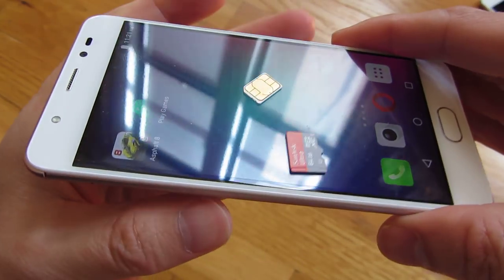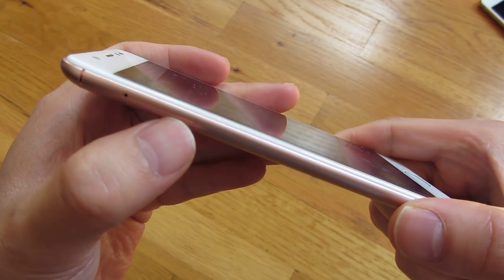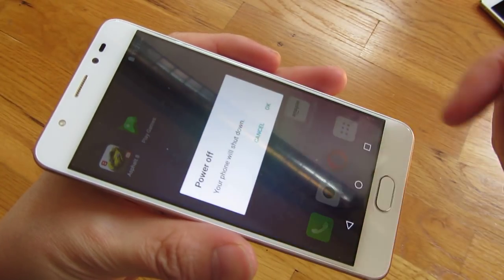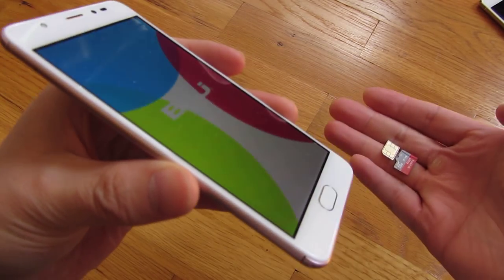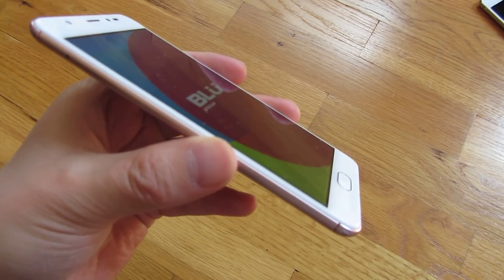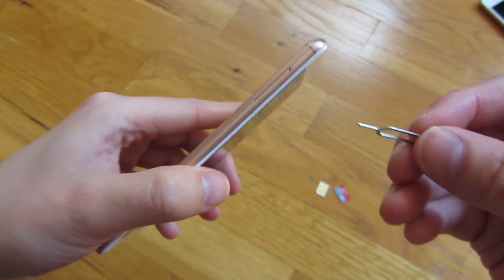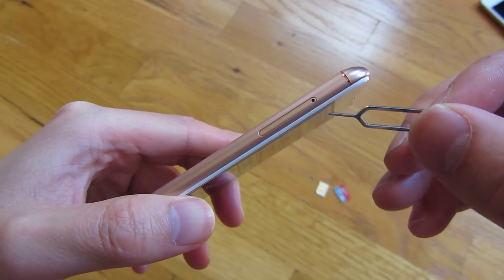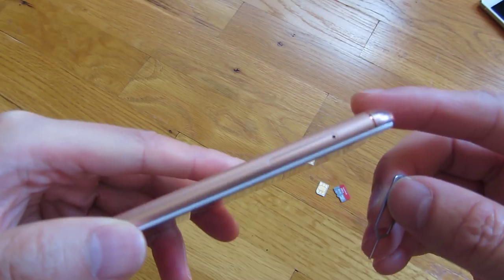So the tray is actually on the side here, so let me power down the phone and put these things down. What they give you is this contraption here which is basically like a paper clip thing that you stick into this hole, except it's a lot smaller.